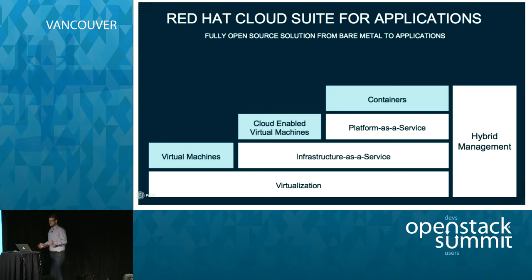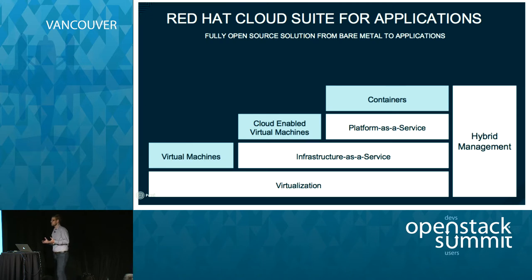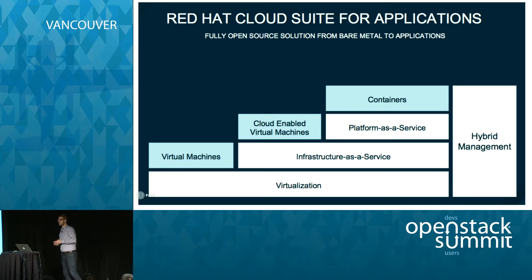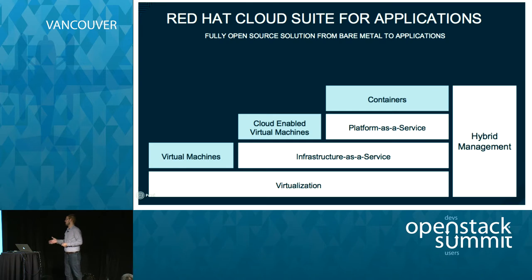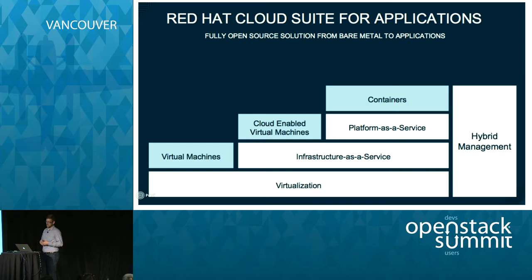What we announced this morning was something called Red Hat Cloud Suite for Applications. Basically, this is an offering with an early access program now available. So if you want to run from virtual machines to cloud-enabled virtual machines on infrastructure-as-a-service based on OpenStack, all the way up to containers running in a platform-as-a-service with OpenShift Enterprise, along with hybrid management — we're now providing this. It's fully open source from bare metal to apps.